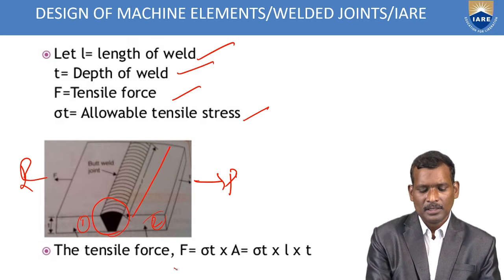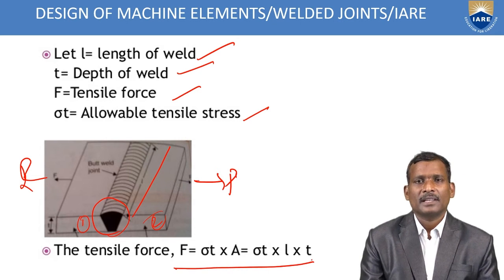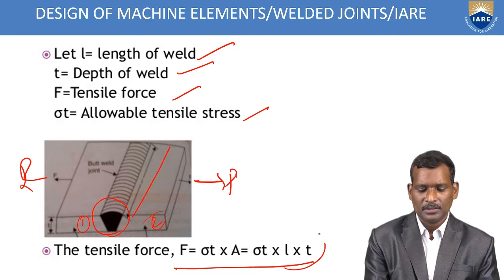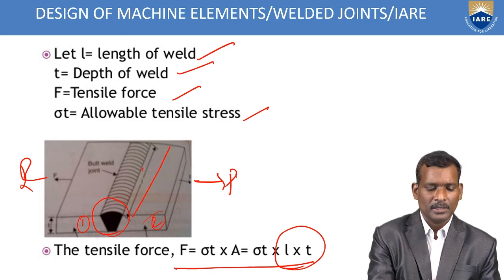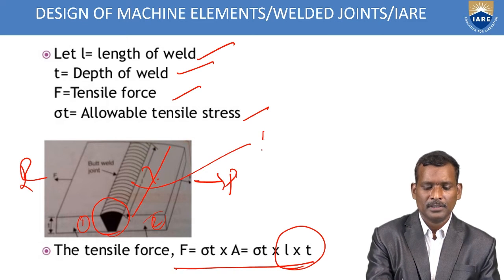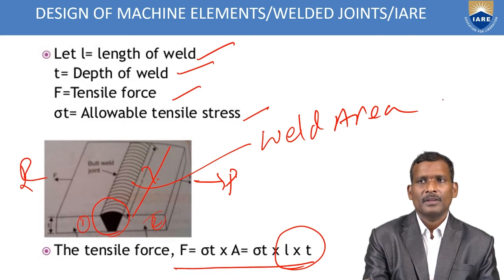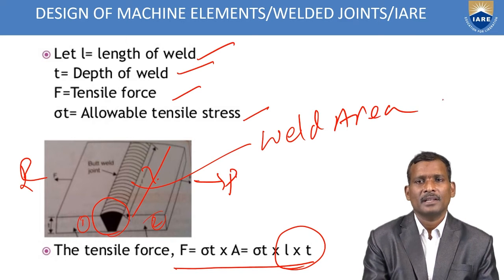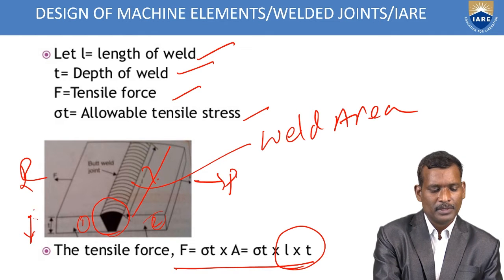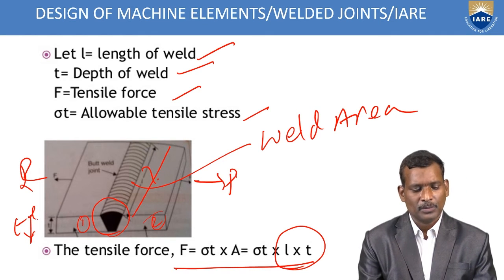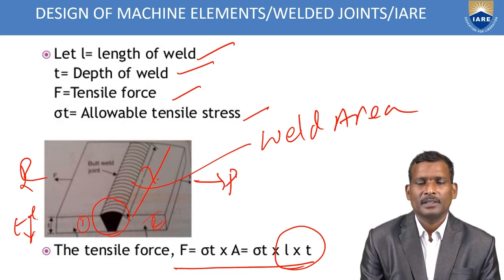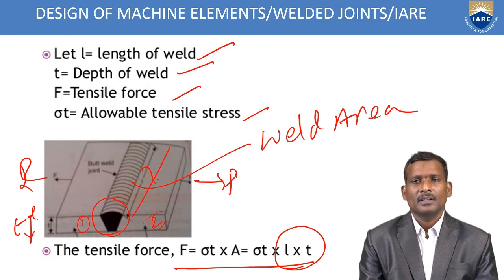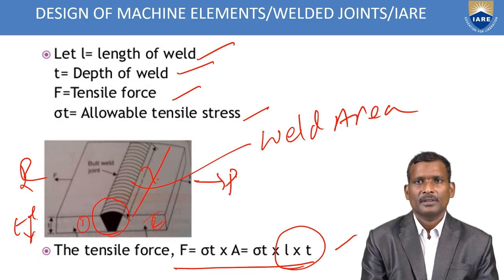How to calculate tensile force? The tensile force is equal to tensile strength multiplied with area — specifically, the weld area. The weld area is calculated as length multiplied with depth or thickness of the plate, that is L into T. Multiply with sigma T and you will get the tensile force — the tensile strength of the joint.